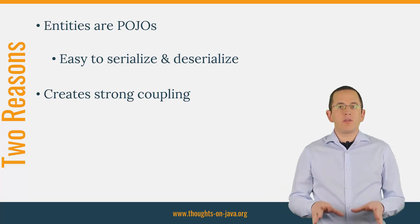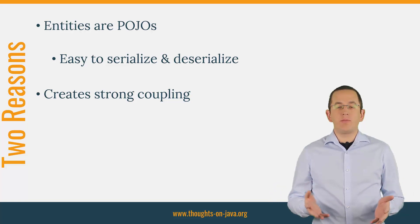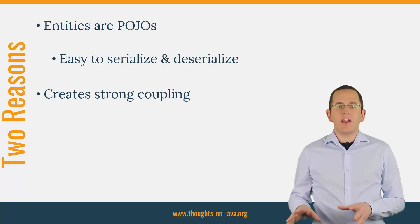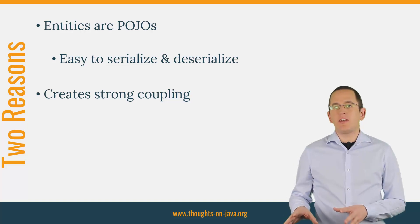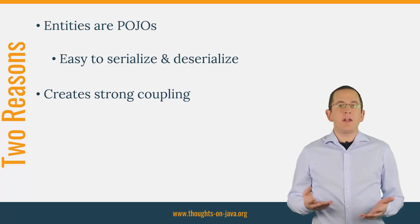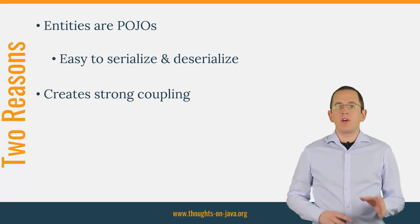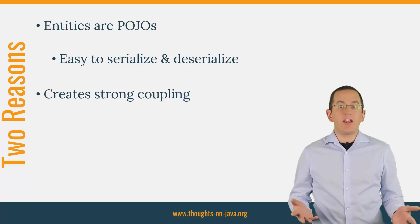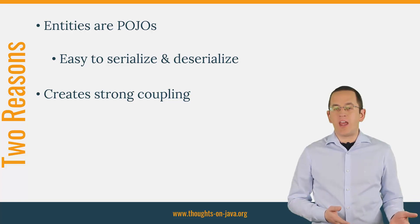Exposing your entities creates a strong coupling between your API and your persistence model. Any difference between the two models introduces extra complexity and you need to find a way to bridge the gap between them. The most obvious ones are the handling of associations between your entities. There is an obvious conflict — it seems like exposing entities makes implementing your use cases easier, but it also introduces new problems. So what has a bigger impact on your implementation, and are there any other problems that might not be that obvious?